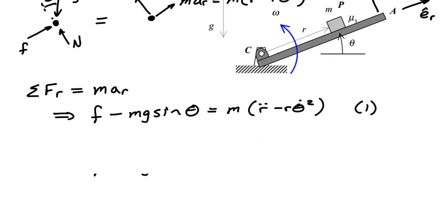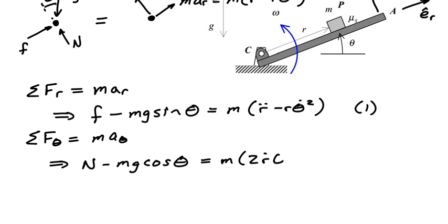I can then sum forces in the theta direction. So if I do that, I know that's going to equal m times a theta. And this is going to give me that n minus mg times the cosine of the angle theta is equal to m times quantity 2 r dot theta dot plus r times theta double dot. Let's call that equation 2.